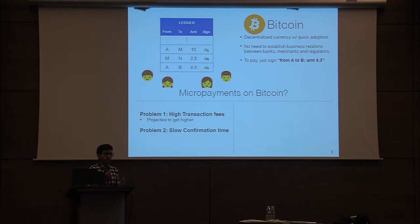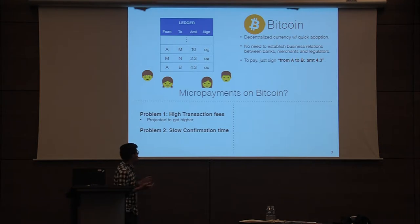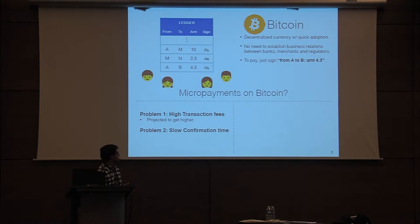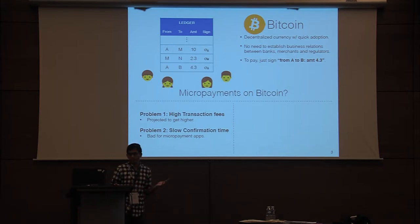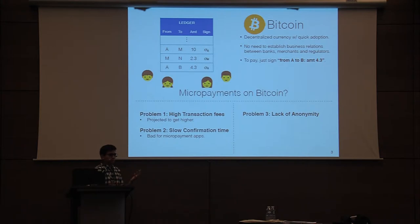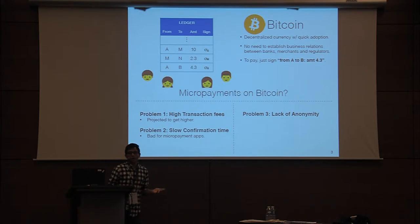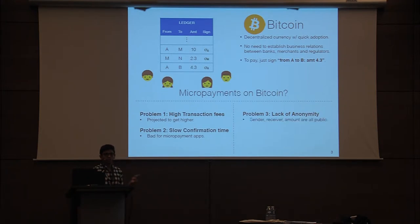The second issue is that each transaction takes a long time to confirm in Bitcoin — on the order of 10 minutes — and the recommendation is actually to wait more like an hour for your transaction to be confirmed. This is particularly bad for micropayment applications because nobody wants to wait an hour for their web page to load. A third issue is from a privacy perspective: Bitcoin doesn't offer any strong anonymity guarantees. In particular, the sender, receiver, and transaction amount are all public for every transaction.